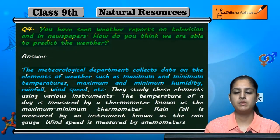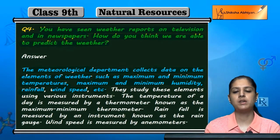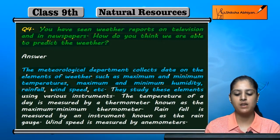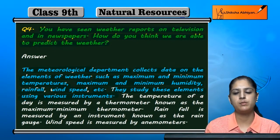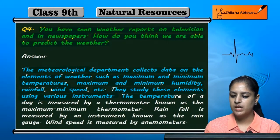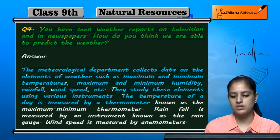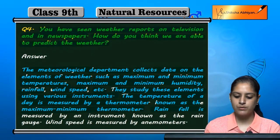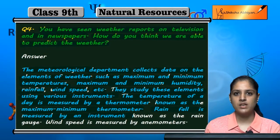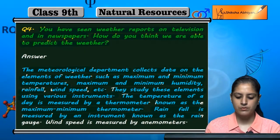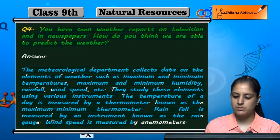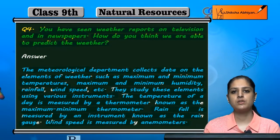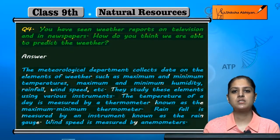All these elements are collected by the meteorological department, which studies them using a lot of instruments. Temperature is measured by thermometers, including maximum and minimum thermometers. Rainfall is measured by instruments known as rain gauges. Wind speed is measured by the anemometer.